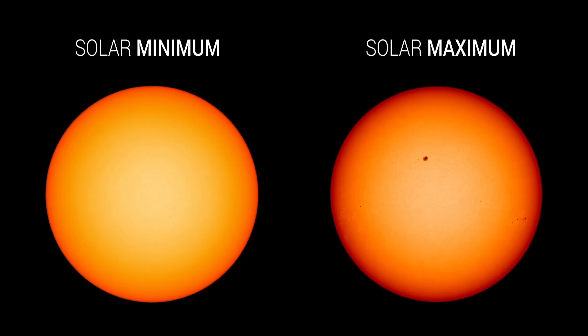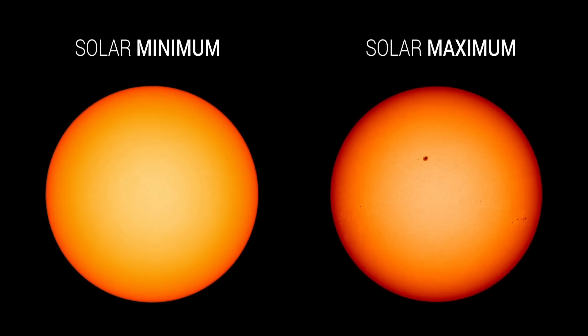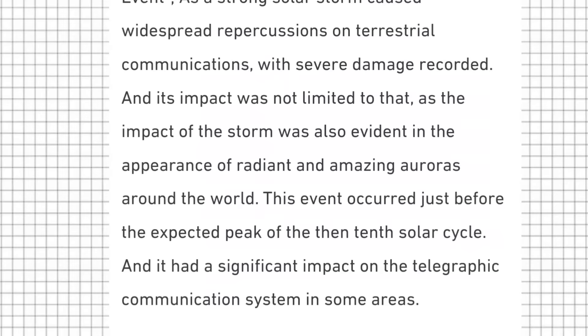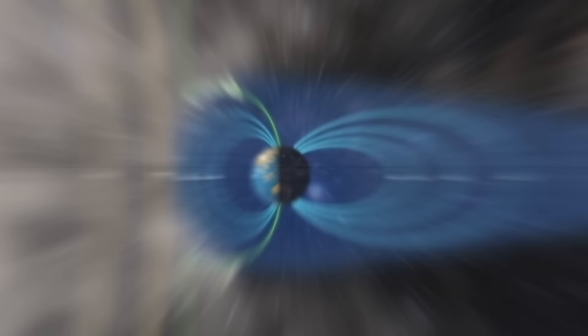Scientists are still not sure why the solar activity is higher than expected. Therefore, further study of these events is necessary to understand the internal processes of the sun. Although solar cycle number 25 is not the strongest in history, scientists expect it to become one of the most powerful solar cycles. We've never experienced one of the extreme case events, and we don't know how our infrastructure would respond to it.